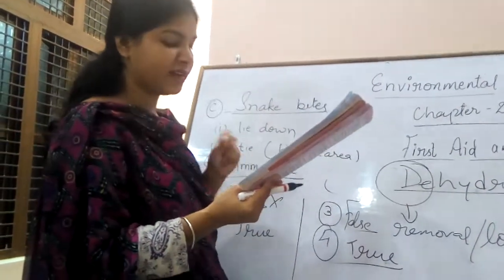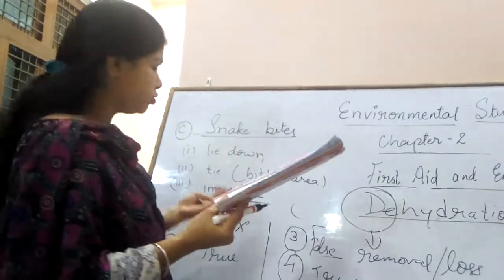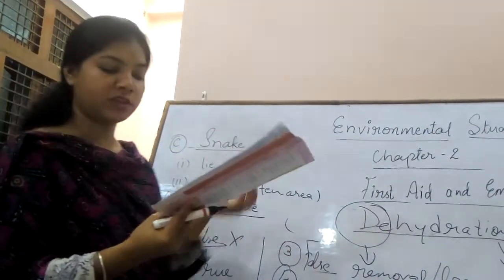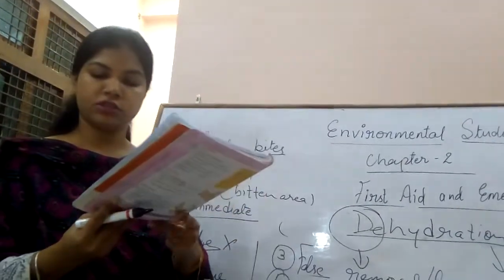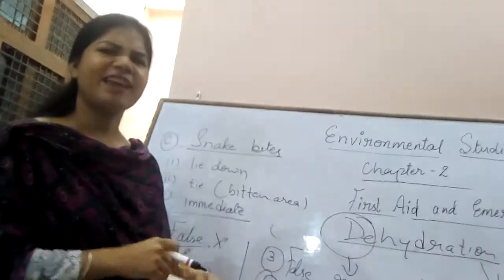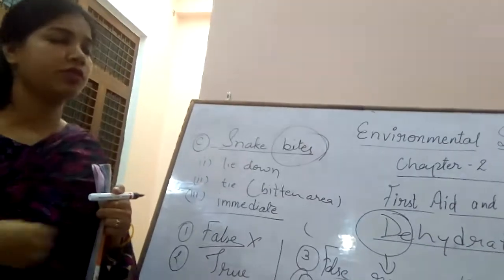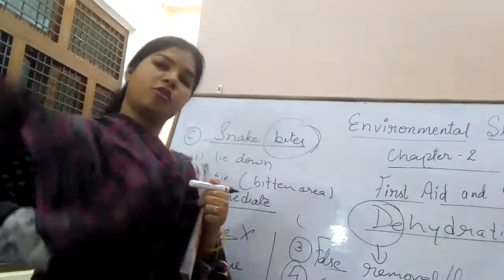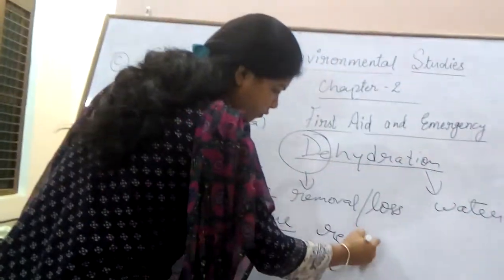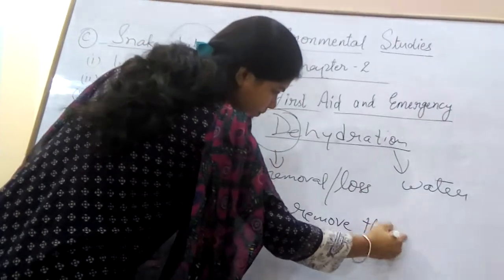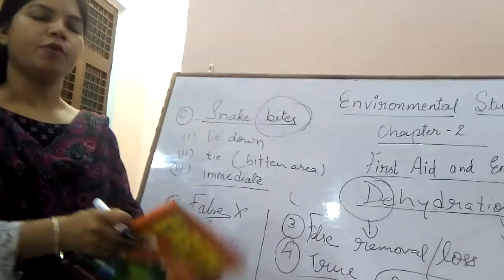Next: suggest the first aid methods for these emergencies. First one is animal bites. We have discussed this — wash the bitten area with antiseptic soap and water to wash away germs. We are using antiseptic soap or liquid to remove the germs.